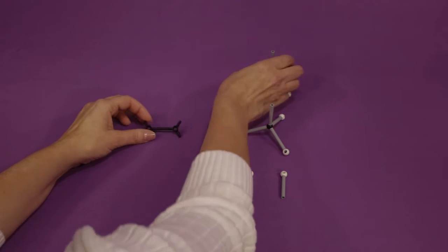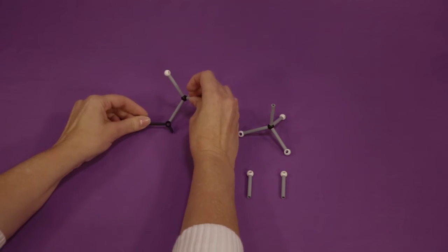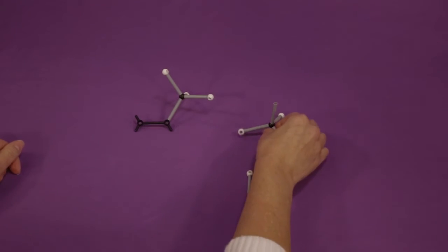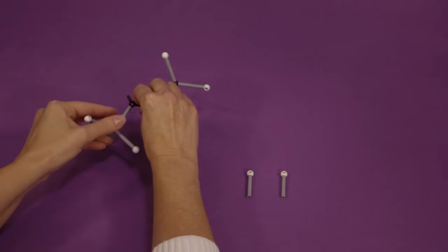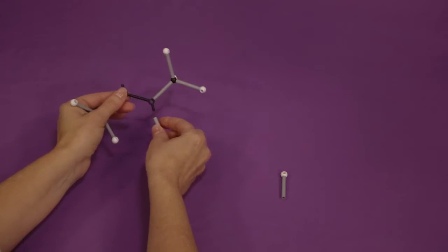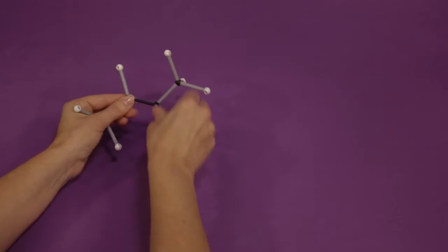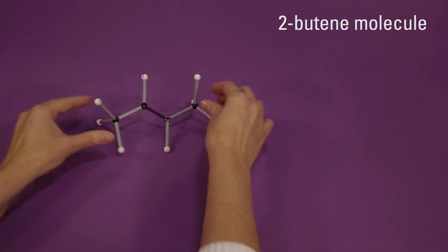Attach one of the methyl groups to the top prong of either carbon on the double bond. Attach the other methyl group to the bottom prong of the opposite carbon on the double bond. Fill all the available positions with hydrogen. The finished product is an E-2-butene molecule.